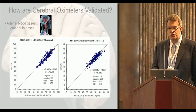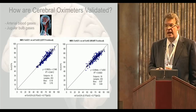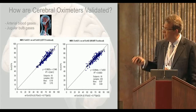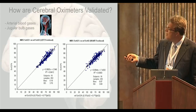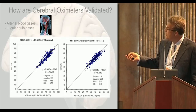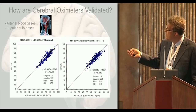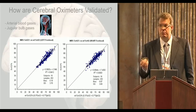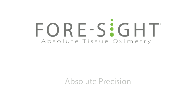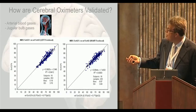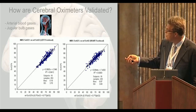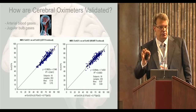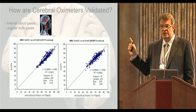Here you can see the reference ScO2 — measured invasively and calculated with a co-oximeter — compared to the ScO2 actually displayed by the machine. This shows how precise the oximeter is. This is the Foresight, and you can see how all the individual measurements stick to the reference line. It has a standard deviation of about 3.7%. Modern pulse oximeters are about 2–3% on their standard deviation, so the cerebral oximeter is just a little bit higher. The Foresight is a very precise device.